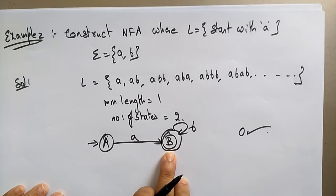Let me take another language: starts with ab. For a language starting with ab, the length of the string is two so the number of states is two plus one — three states: a, b, and c. State a on input a goes to b, and b on input b goes to c which is the final state. The string must always start with ab. On state c you can take a loop with a or b, so strings like abaa, abb, abab are all accepted.